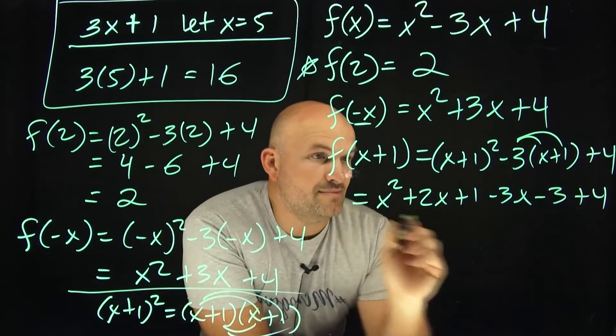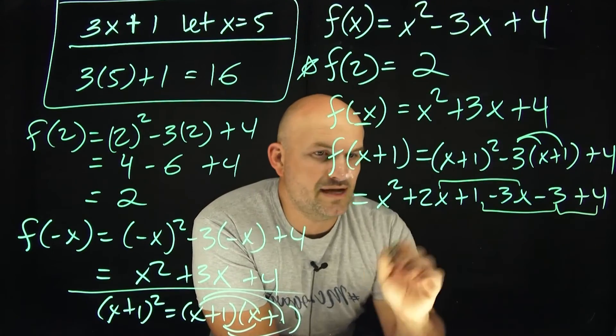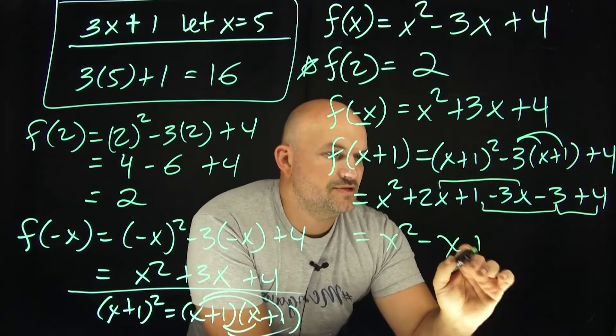Now what I need to do is just combine my like terms. So I can combine these x's and then I can combine these numbers. So therefore, I'm going to have a final answer here of x squared minus x plus 2.